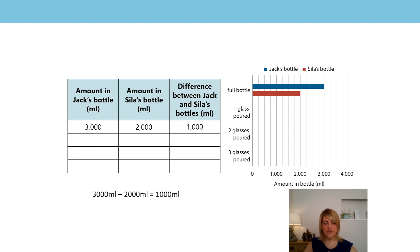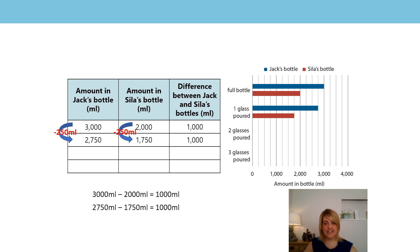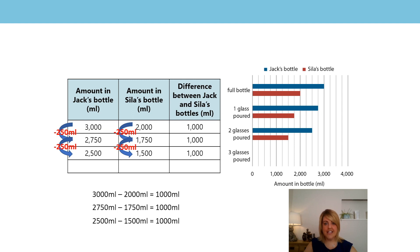I can work this out by doing 3000 millilitres subtract 2000 millilitres to give me 1000 millilitres. Now if they both poured one glass of 250 millilitres out, Jack would now have 2750 millilitres and Scylla would have 1750 millilitres. But what's the difference in the amounts they now have in their bottles? Yes, still 1000 millilitres. I can work that out by doing 2750 millilitres subtract 1750 millilitres to give me 1000 millilitres. What about if they pour another glass of 250 millilitres? Jack would now have 2500 millilitres and Scylla would have 1500 millilitres. But what's the difference? Yes, it's still 1000 millilitres — 2500 millilitres subtract 1500 millilitres gives 1000 millilitres.